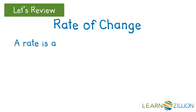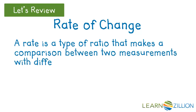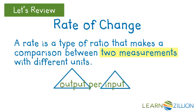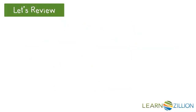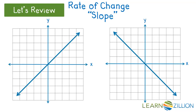You probably remember that a rate is a type of ratio that makes a comparison between two measurements with different units. The two measurements give us the numbers to calculate the change in output per change in input — that's our rate of change. Also, don't forget that slope has direction: up or down, positive or negative.